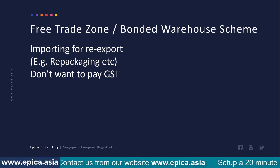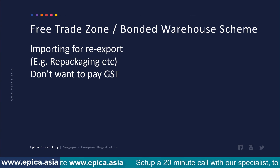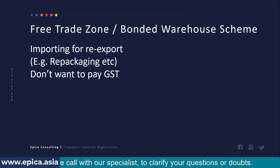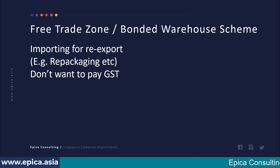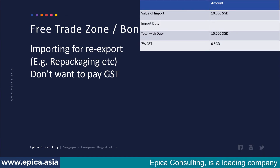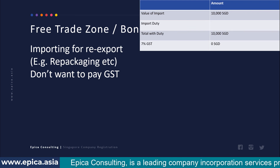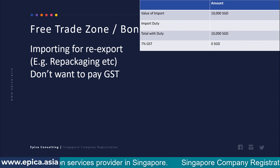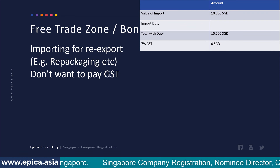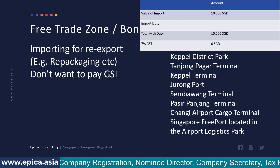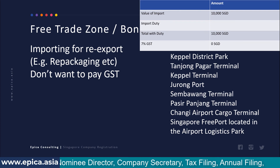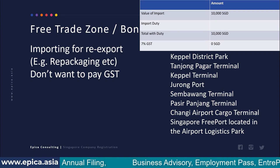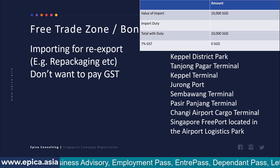GST only applies if you move goods from the bonded warehouse into Singapore locally. You don't need to rent an entire warehouse — most logistics service providers will import goods, keep them in their bonded warehouse, provide repackaging or relabeling services, and export on your behalf for a charge. In this circumstance, the value of import is 10,000 with no import duty and no GST charged. Areas in Singapore where bonded warehouses are available include Keppel Distripark, Tanjong Pagar, Keppel Terminal, and Jurong Port. You can find service providers through the Singapore Logistics Association website members directory.